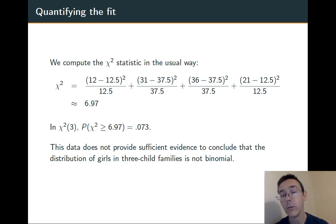So, not huge, but also not small enough to reject the null hypothesis in this case. The data does not provide sufficient evidence to conclude that the distribution of girls in three-child families is not binomial.